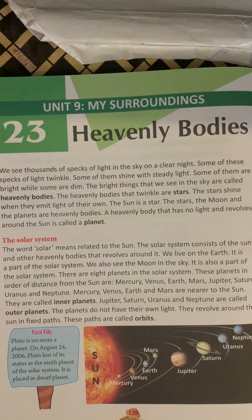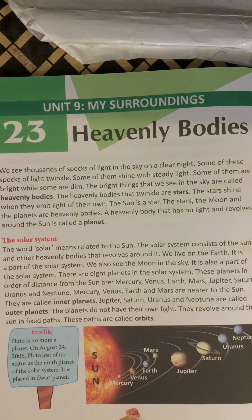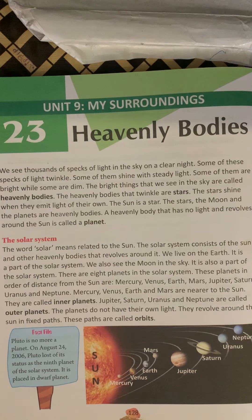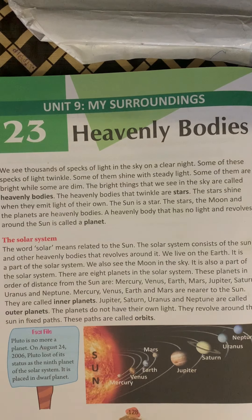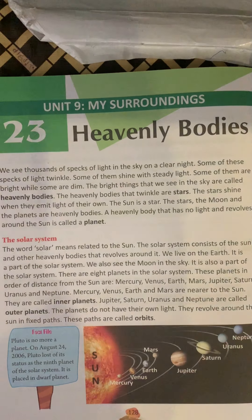This is about heavenly bodies. All the objects that you can see in the sky are known as heavenly bodies. So, that's all for today. Today you have to read this page properly, understand the diagram, and then we will continue the chapter tomorrow. Okay? Bye-bye and take care.